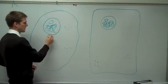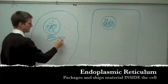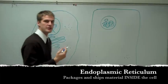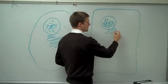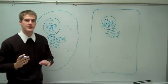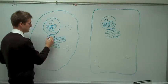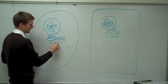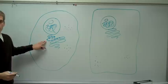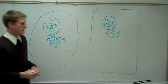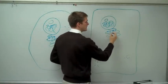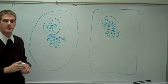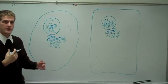Hooked on to the nucleus is the endoplasmic reticulum. The endoplasmic reticulum has two parts: a smooth part and a rough part. The rough part is closest to the nucleus and has ribosomes on it — that's why it's rough. The smooth part does not have ribosomes. This is found in both plant and animal cells.